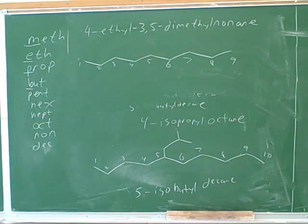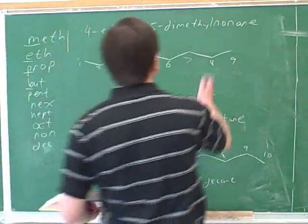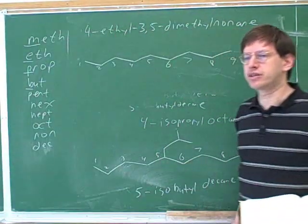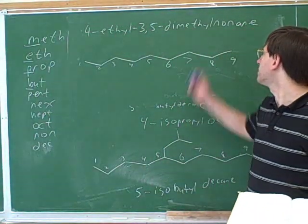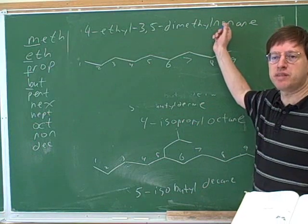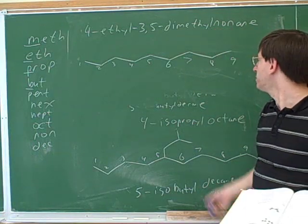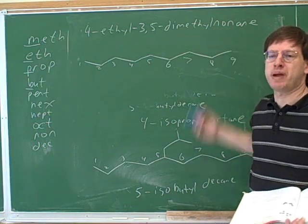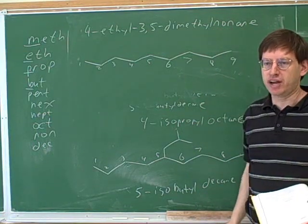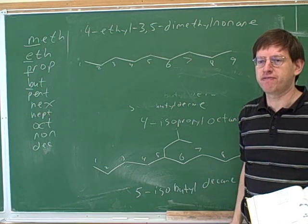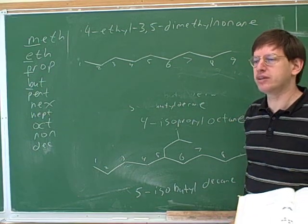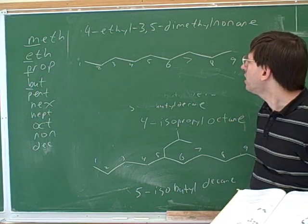You drew the parent chain well — that was good. We know that there are nine carbons in the parent. And you did something else that was very good, which is that you numbered the parent chain. We've seen how good it is to actually physically number the parent chain.